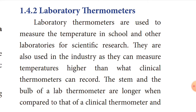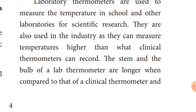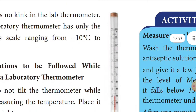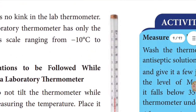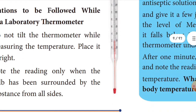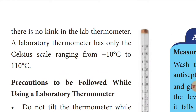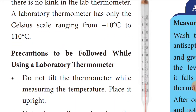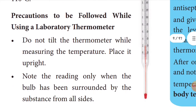The stem and bulb of the lab thermometer are very long compared to the clinical thermometer. See the diagram — this is a laboratory thermometer. There is no kink here, no bent position. This thermometer has only the Celsius scale, not Fahrenheit, ranging from minus 10 degrees Celsius to 110 degrees Celsius.